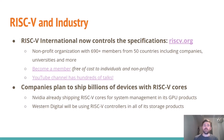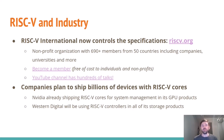RISC-V International now controls the specifications originally developed at Berkeley, and you can find it at RISC-V.org. It's a nonprofit organization with over 700 members from 50 different countries, including companies and universities. You as an individual can become a member free of cost — it's also free for nonprofits. There's also a YouTube channel from RISC-V International with hundreds of talks from over the years, which is one of the ways I've learned a lot about RISC-V.